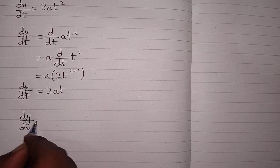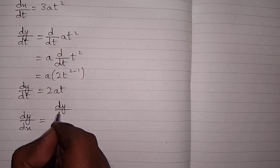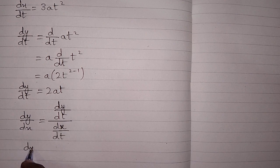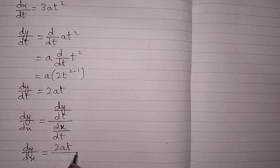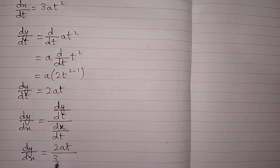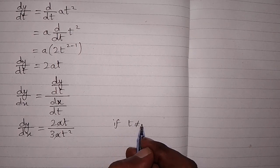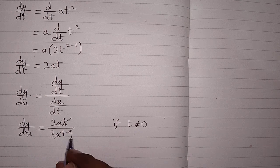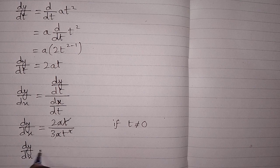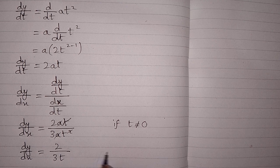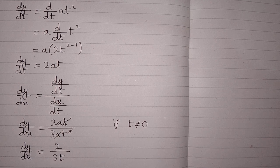Now we find dy by dx, which is equal to dy by dt divided by dx by dt. Substituting: dy by dt is 2at and dx by dt is 3at squared. We can cancel a with a, and provided t is not equal to 0, we cancel t with t squared. Therefore dy by dx is equal to 2 upon 3t, where t is not equal to 0, and this is the required answer.